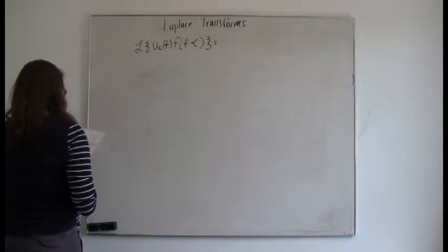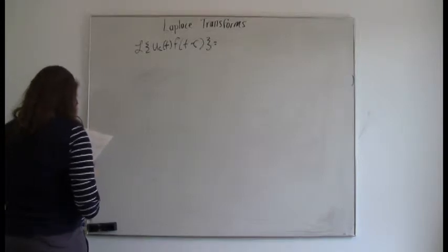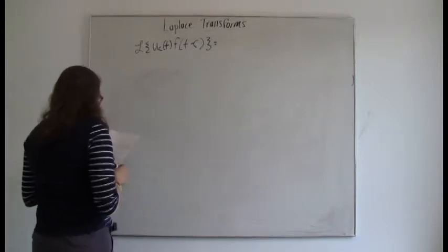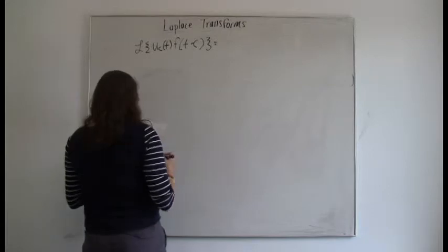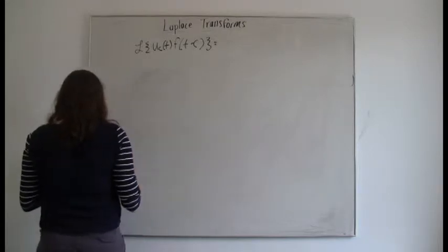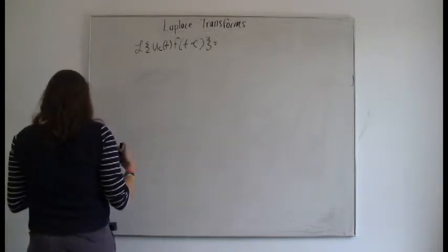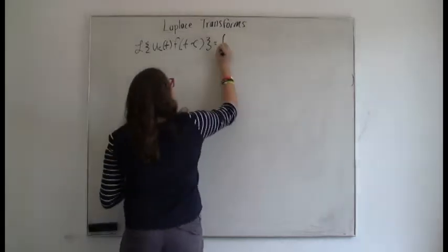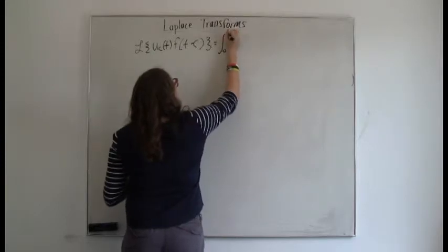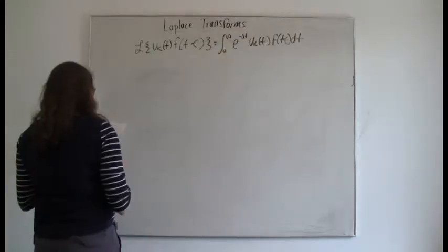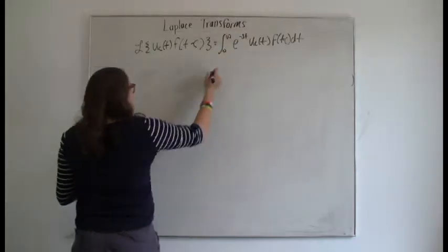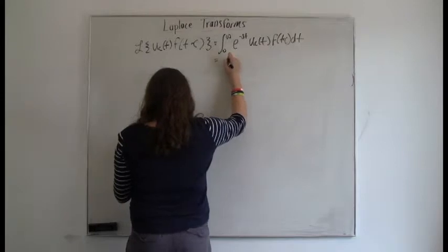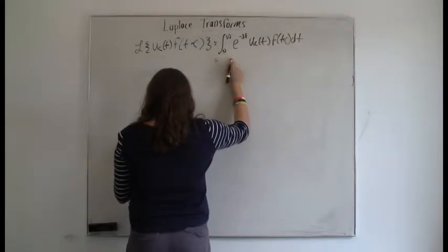We have the function u_c(t) times f(t minus c), and we want to take the Laplace transform of it. We can write this as the improper integral from zero to infinity of e to the negative st times u_c(t) times f(t minus c) dt.